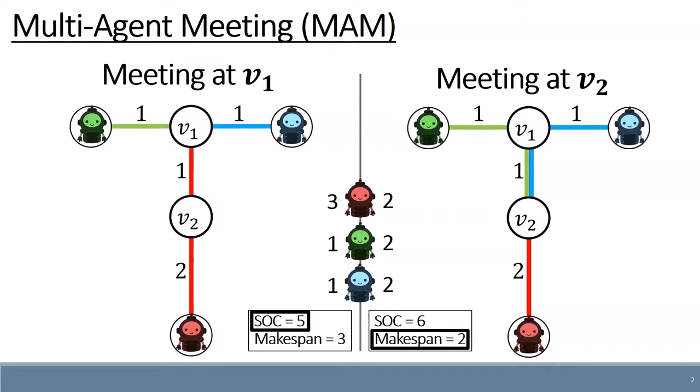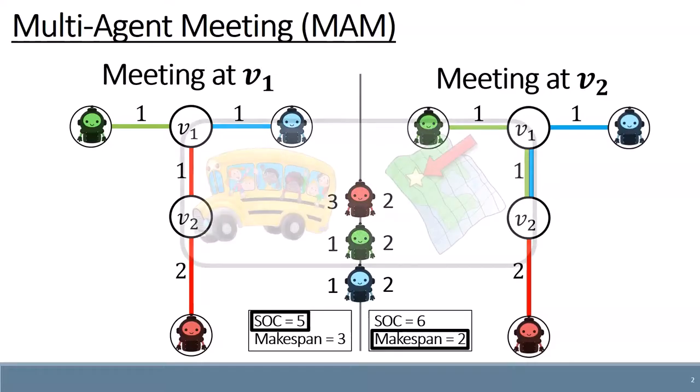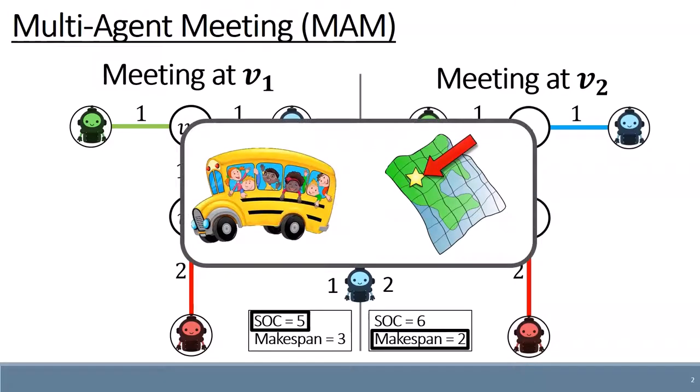Multi-agent meeting has many real-life applications, such as choosing a gathering point for multiple traveling agents, or suggesting a meeting location that needs to be close to important surrounding locations.